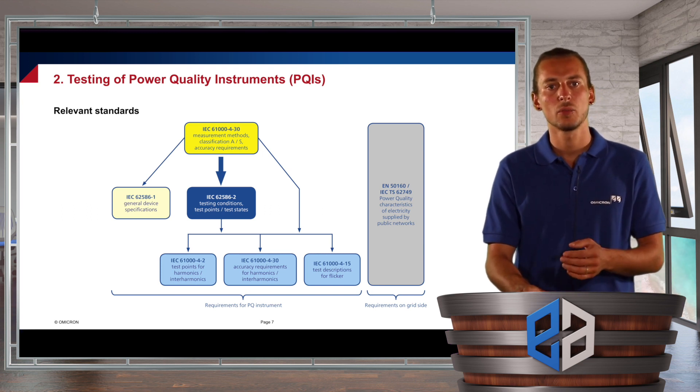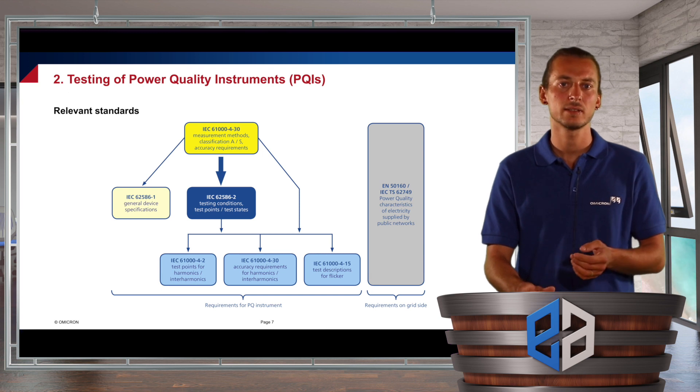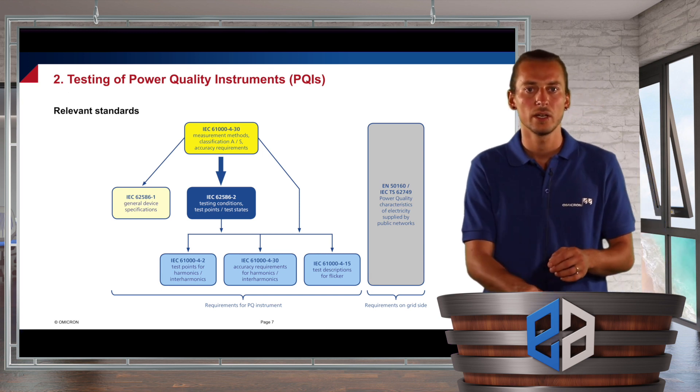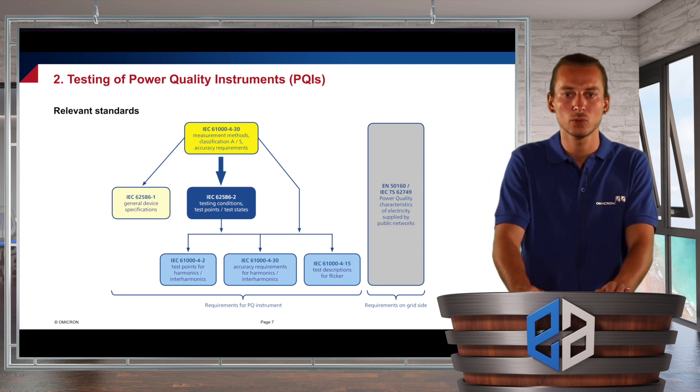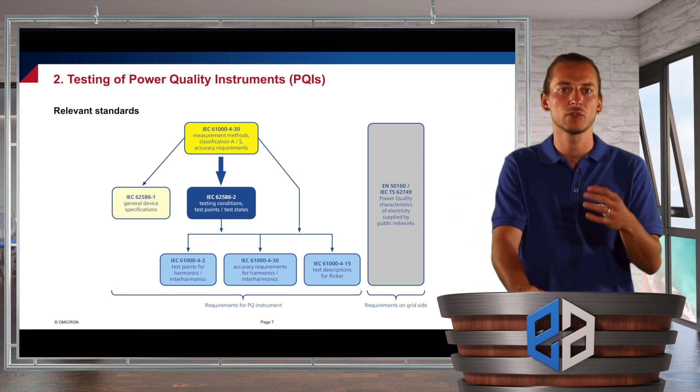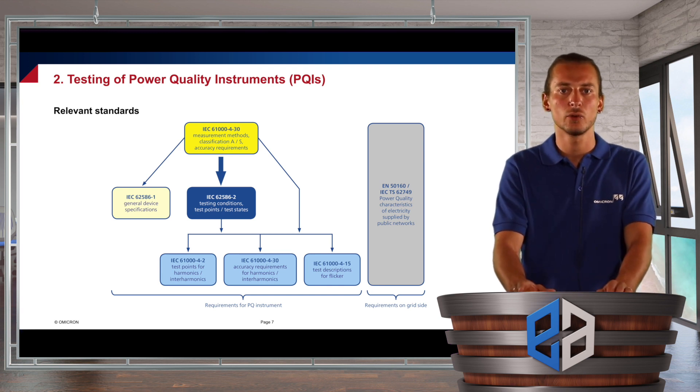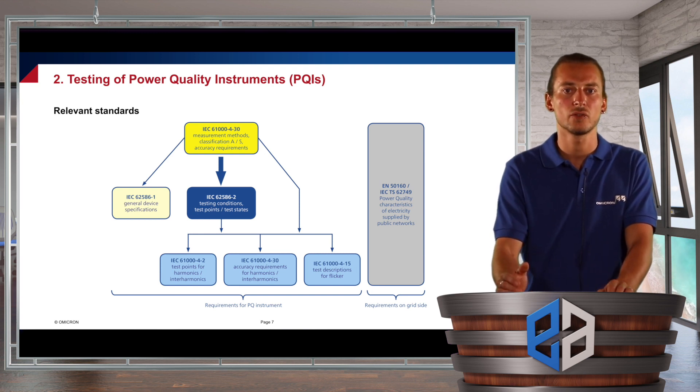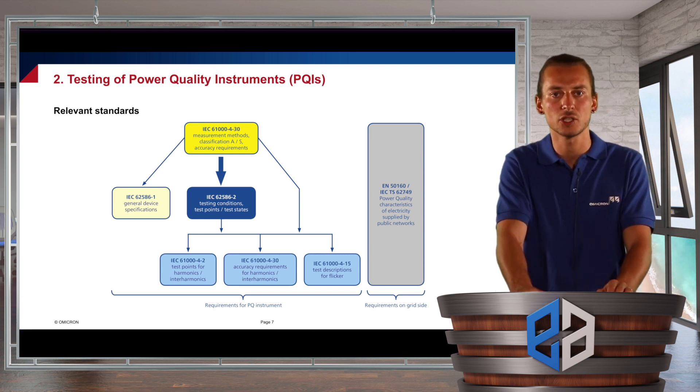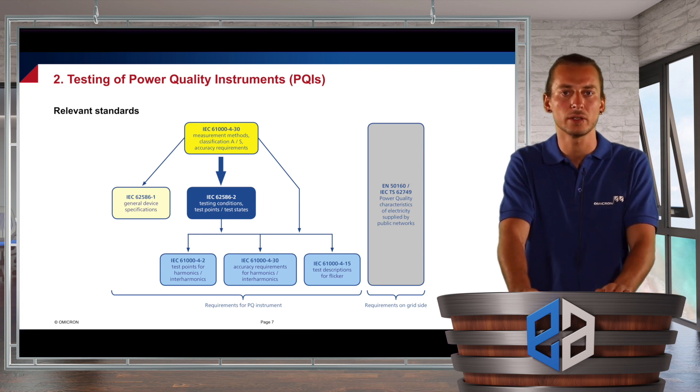Then this standard points out to the standards IEC 62586-1 and dash 2. And there, especially the dash 2, is very important when it really comes to testing of power quality analyzers. Because within this standard, there are the real test signals, test conditions and test points defined, which have to be injected when you do a power quality test.